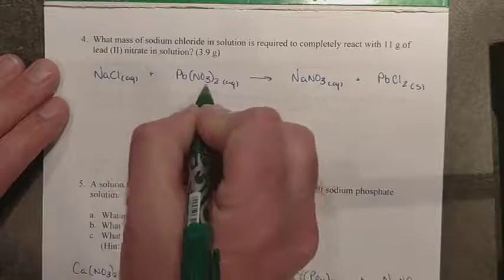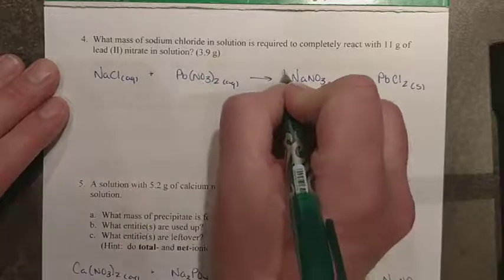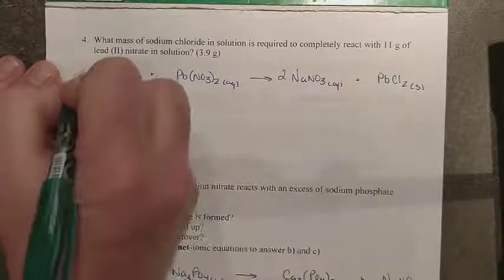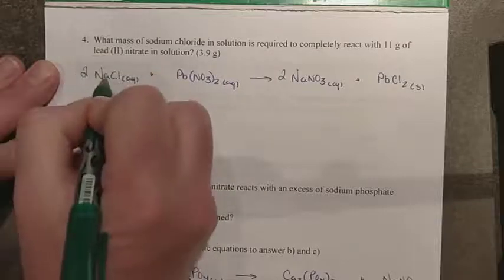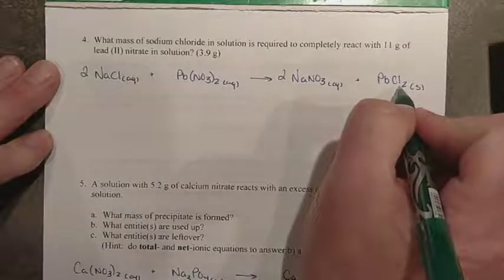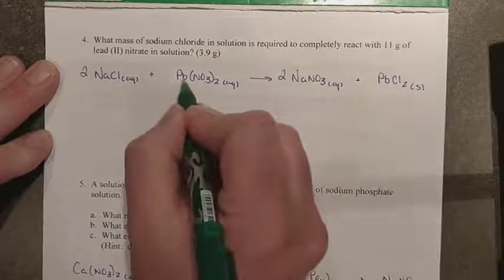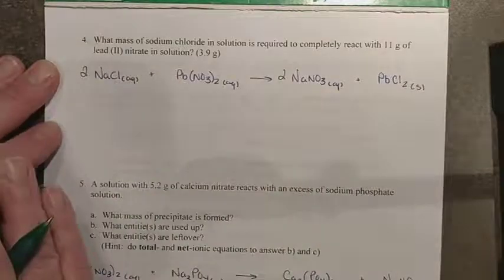We still have some things to balance out. There's two NO3s, so I'm going to need two over here. That gives me two Na's, two here, two Cls. Fantastic, I have two Cls. Pb and Pb over here. So we are now good.